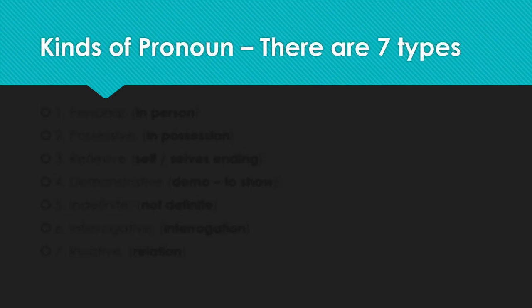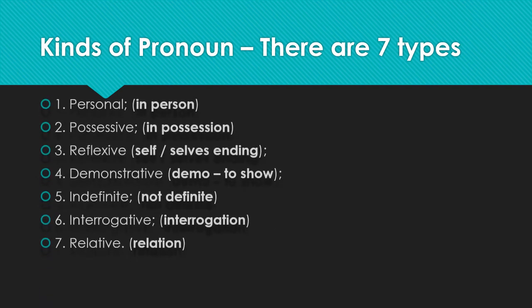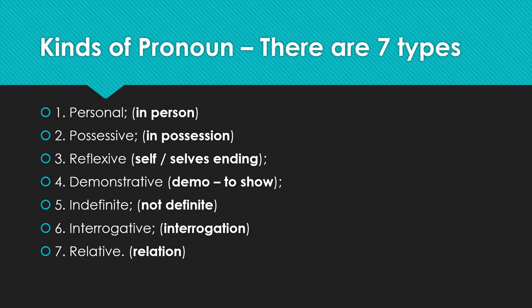There are seven kinds of pronouns, while parts of speech remain eight and nouns have five types. The seven kinds are: personal, possessive, reflexive, demonstrative, indefinite, interrogative, and relative. Here, one keyword is given beside each kind: personal — person; possessive — possession; reflexive — self-ending; demonstrative — demo means to show; indefinite — not definite; interrogative — interrogation, question-asking; relative — relation.